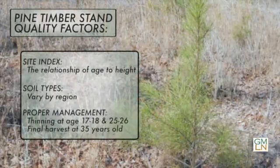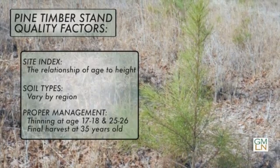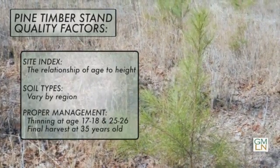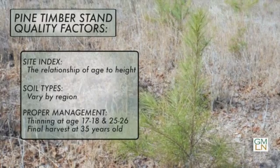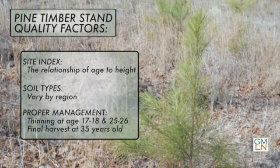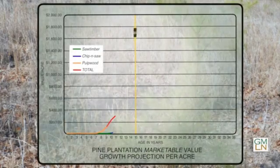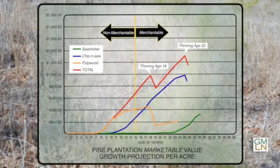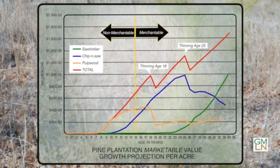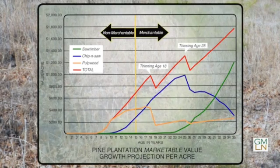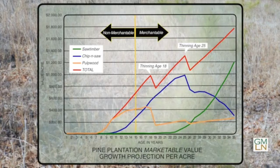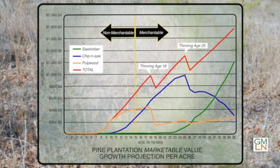Another factor would be how you manage a stand of timber. You must manage it properly or you really won't get the productivity that you would want out of it. You need to thin it. The normal thinnings usually run at an age of about 17 to 18 years old. Then you can possibly do another thinning at 25 to 26 years old, and then a final harvest anywhere between 30 and 35 years old.